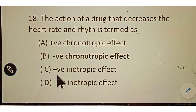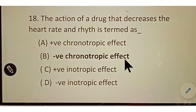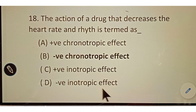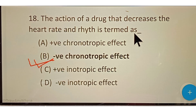Question number eighteen: the action of a drug that decreases the heart rate and rhythm is termed as? Options given: A. Positive chronotropic effect, B. Negative chronotropic effect, C. Positive inotropic effect, D. Negative inotropic effect. The correct answer is option B, negative chronotropic effect. A drug that decreases the heart rate and rhythm is termed as negative chronotropic effect.